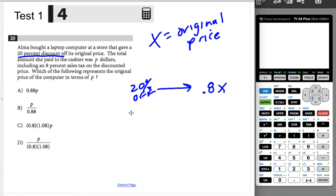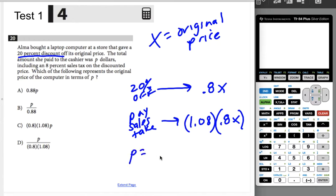But then you have to pay your sales tax, right? Well, 8% sales tax means you're going to do 1.08 times the discounted price you just got. So your price that you're actually paying is going to be 1.08 times 0.8 times X.